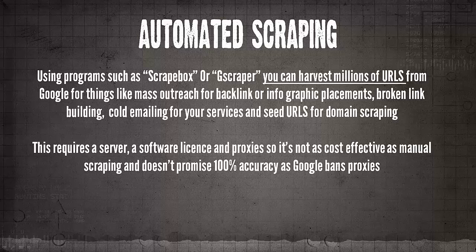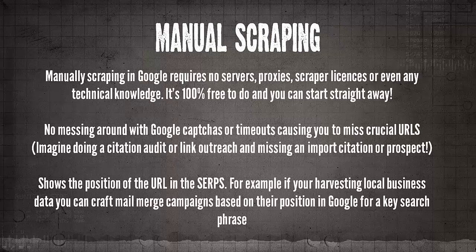The big issue with automated scraping is it requires a server, a software license for ScrapeBox or G-Scraper, and proxies — so it's not as cost-effective as manually scraping Google. It also doesn't guarantee a hundred percent accuracy, as Google will ban the proxies or throw up CAPTCHAs or timeout errors, meaning when you search the URLs you won't get all the results because proxies are getting banned.